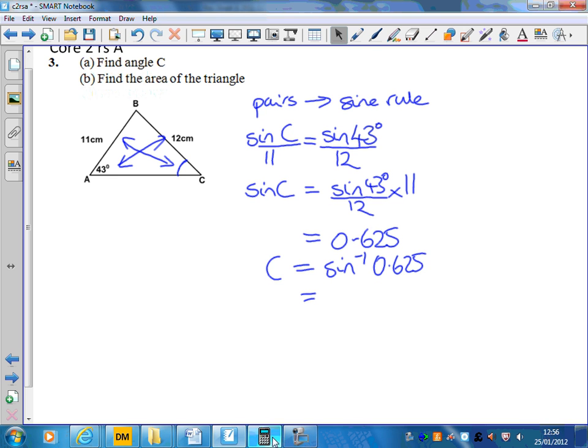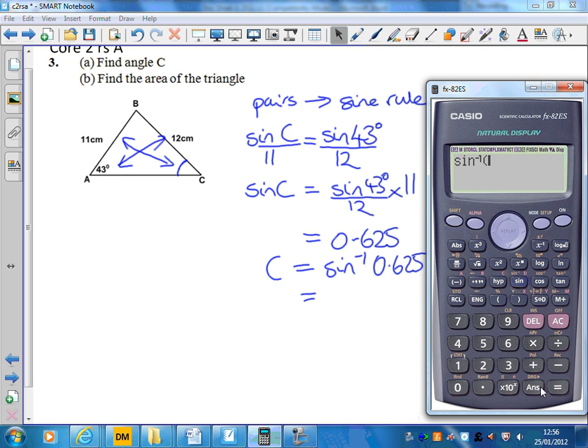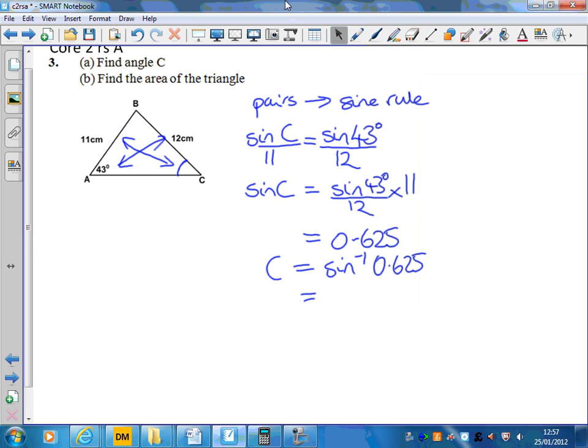To find the angle I'm going to inverse sine that, and that will tell me using the calculator that C is 38.6943 degrees. We were asked for it to one decimal place, so 38.7 degrees.